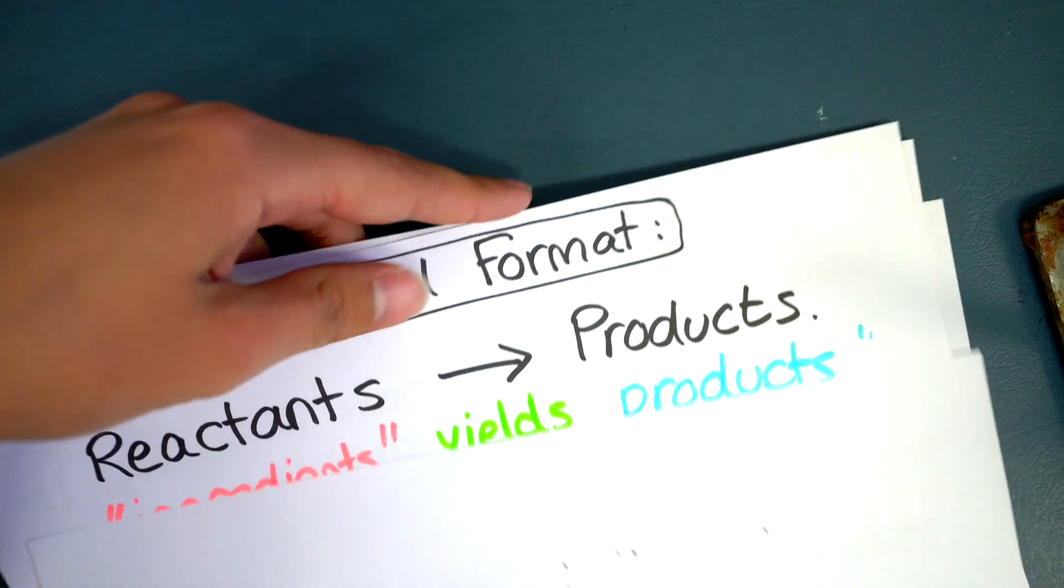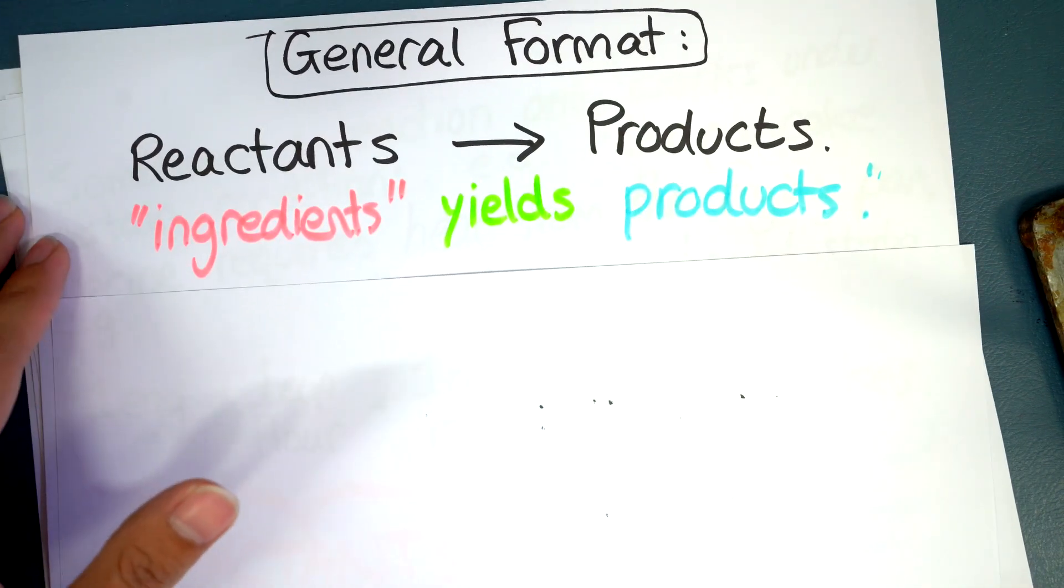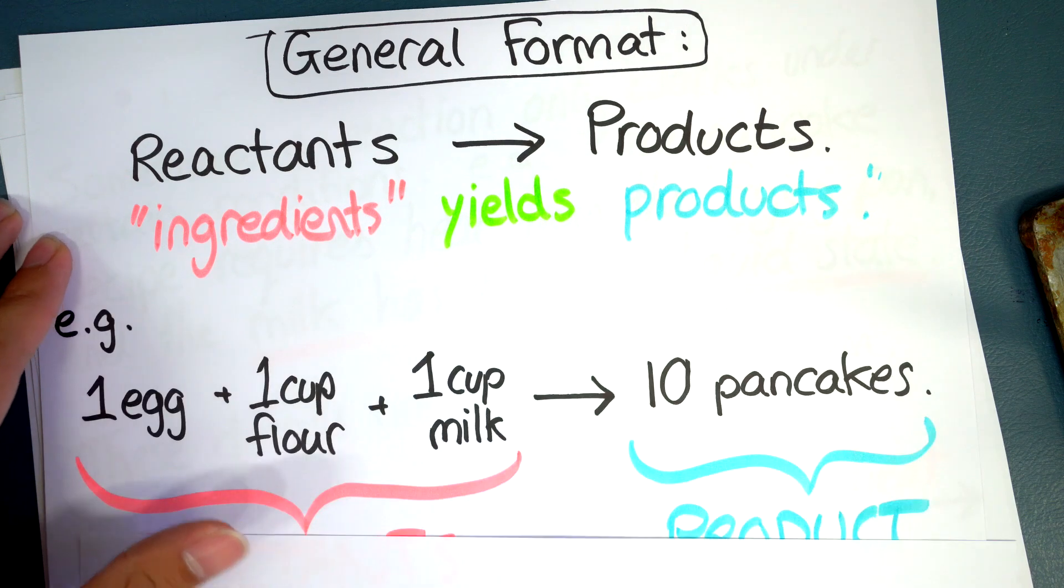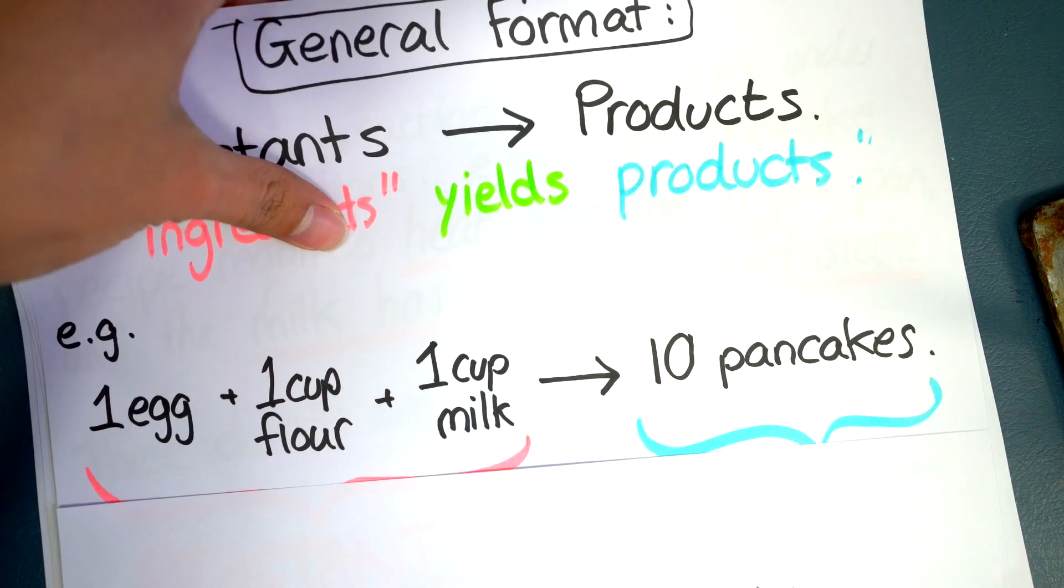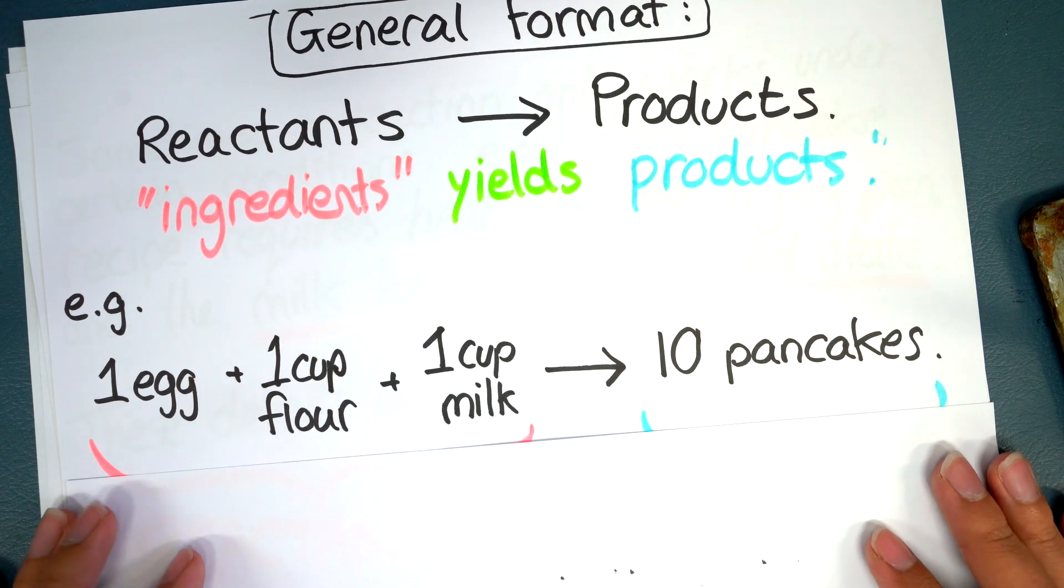So let's look at an example. I find that chemical equations look very similar to cooking recipes. So here I've got a cooking recipe for making pancakes. If you try this at home it works. It's not the best pancake recipe but it does work.